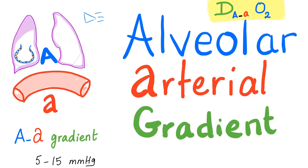It's written like this: D for gradient, A minus a O2 — this is the alveolar arterial gradient for oxygen. Normally it's between 5 to 15 millimeters of mercury, although it depends on your age. With that being said, let's get started.